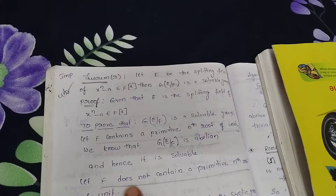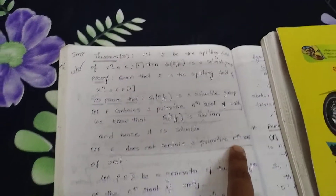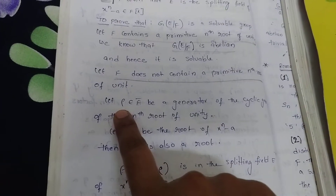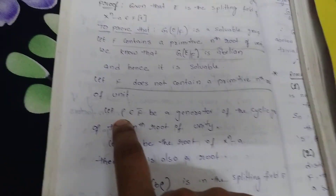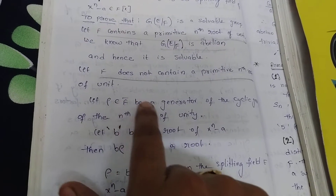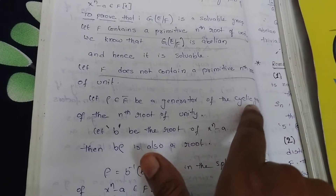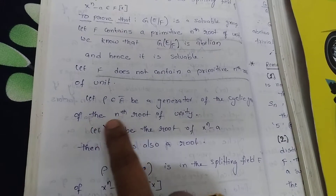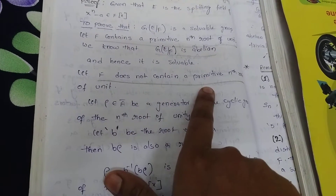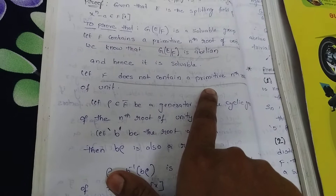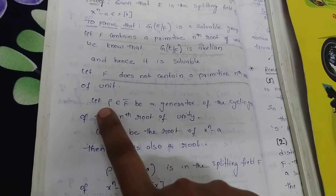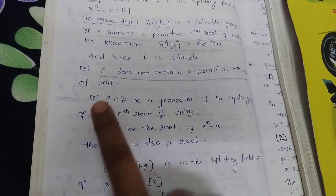If F does not contain a primitive nth root of unity, let ρ be a generator. So ρ belongs to E. Let ρ be a generator of the cyclic group of the nth roots of unity. Since F does not contain the nth root of unity, ρ is in E but not in F.